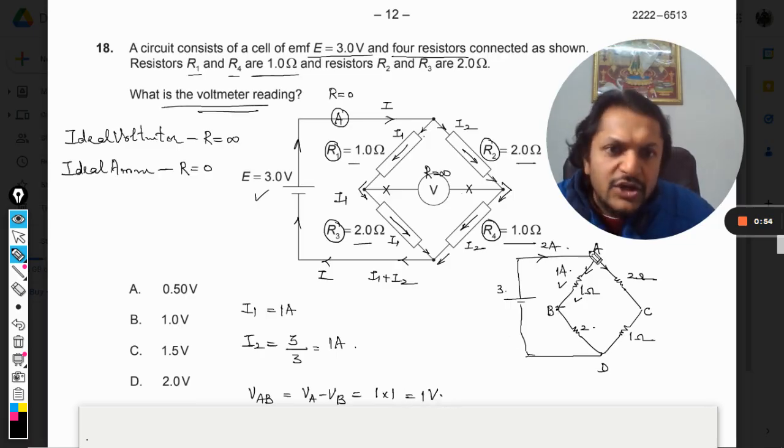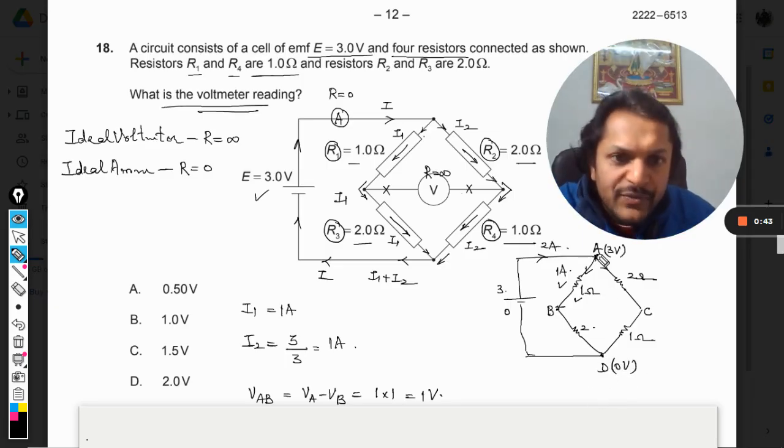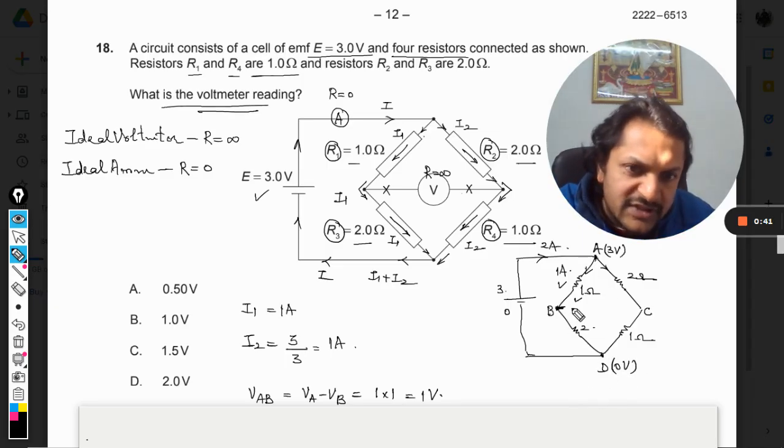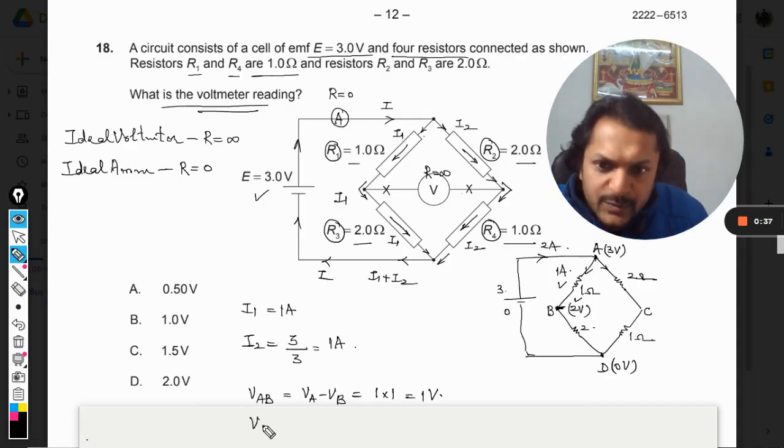So we can just imagine that this is 3 volt and this is zero, so this voltage can be taken as 3 volt and this voltage can be taken as zero volt. So if this is 3 and zero, 1 is dropped, so this voltage has become 2 volt. And as per the Vac is concerned, Va minus Vc is like 1 into 2, that will be 2 volt.